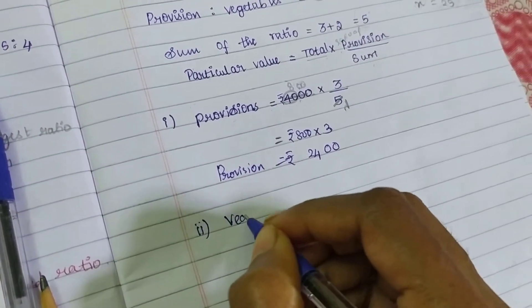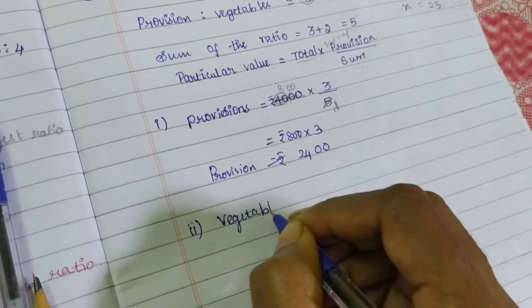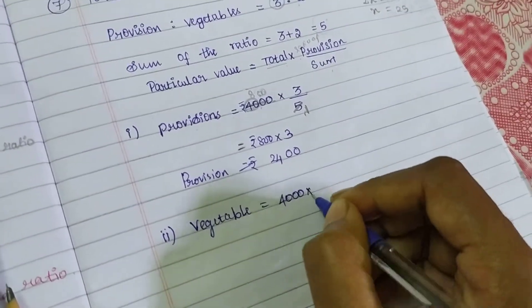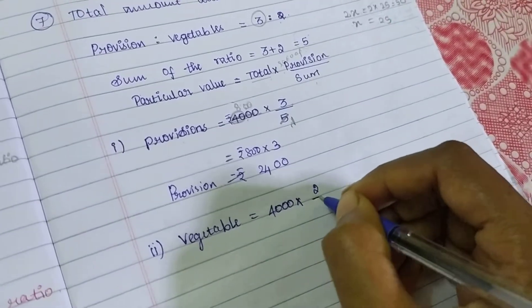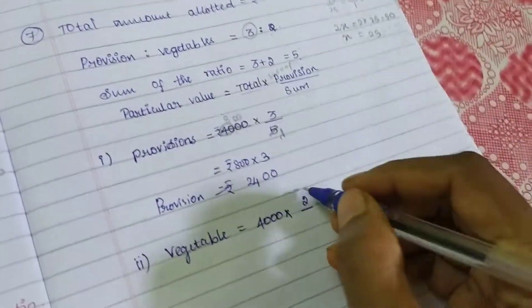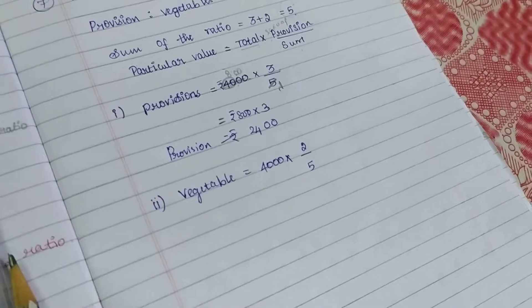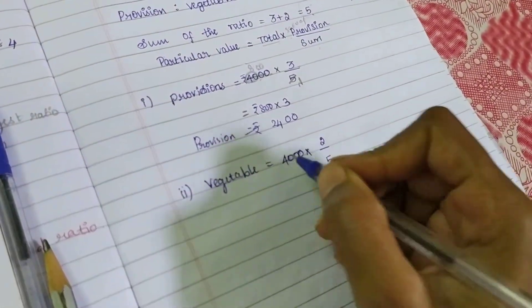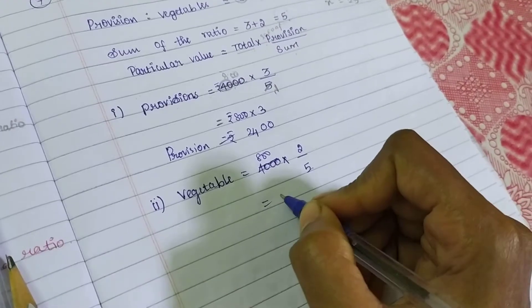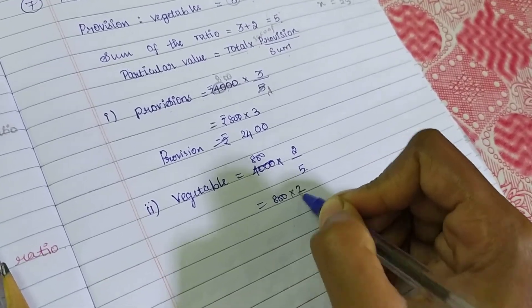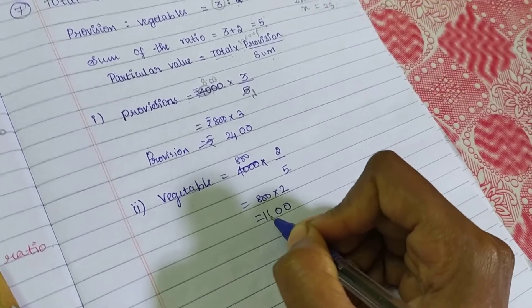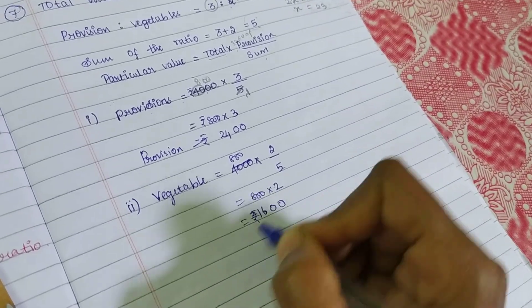The second one, vegetables, the same one. Vegetables is equal to what is the total amount, 4000. What is the ratio for vegetables? 2. 2 by what is the total ratio, 5. So I can divide, the same. Again I am canceling this for 800. 800 into 2, 0, 2 eights are 16 rupees.